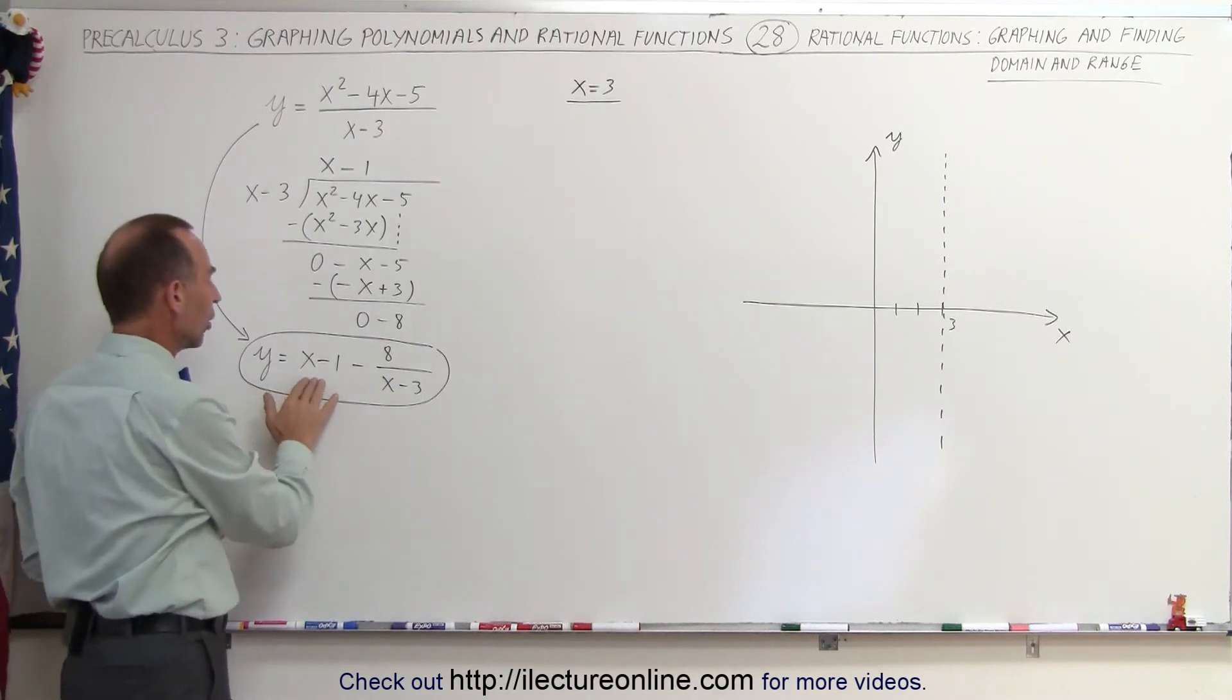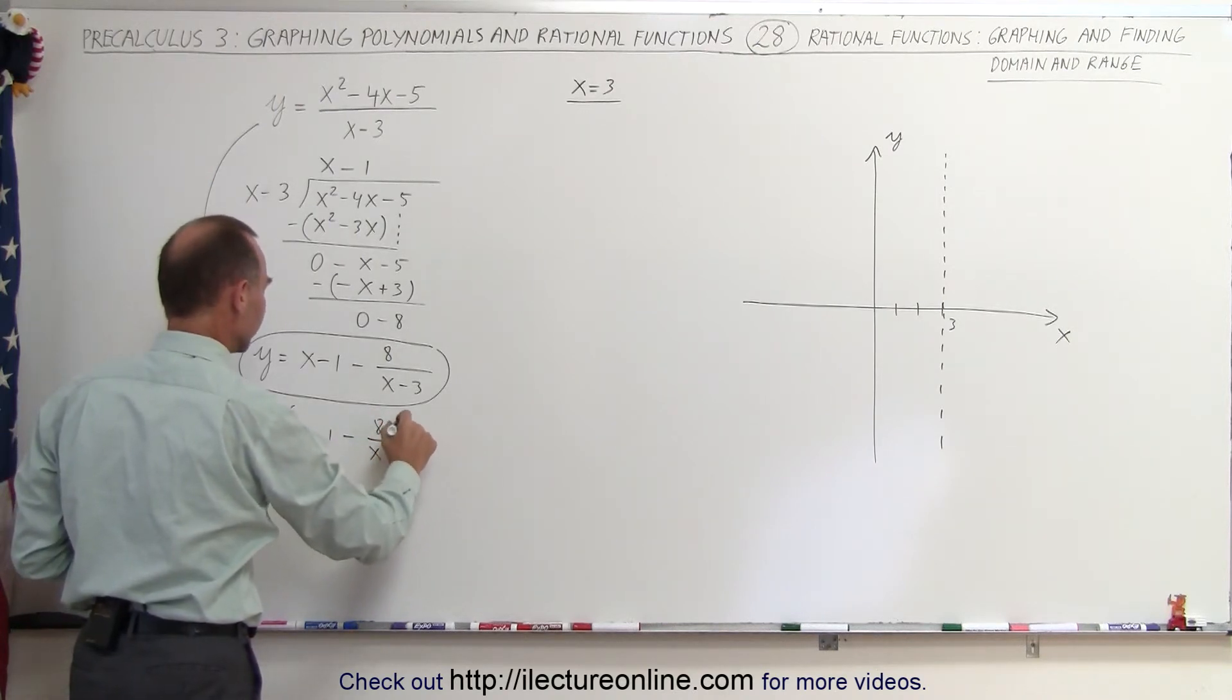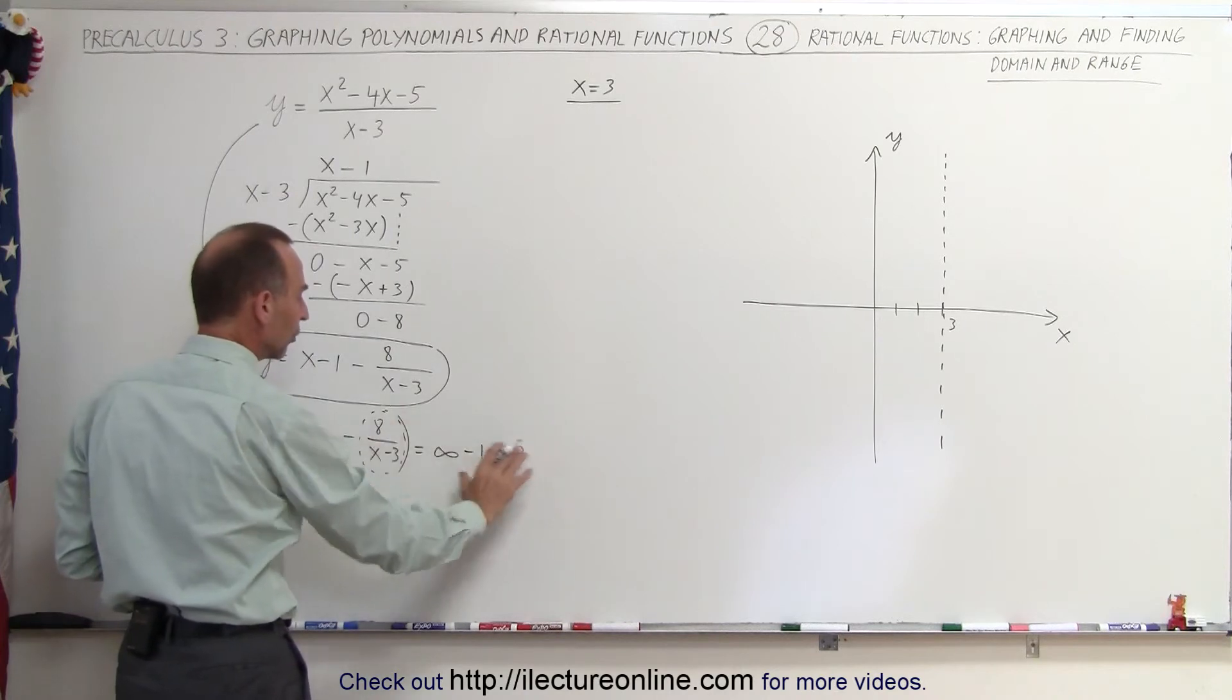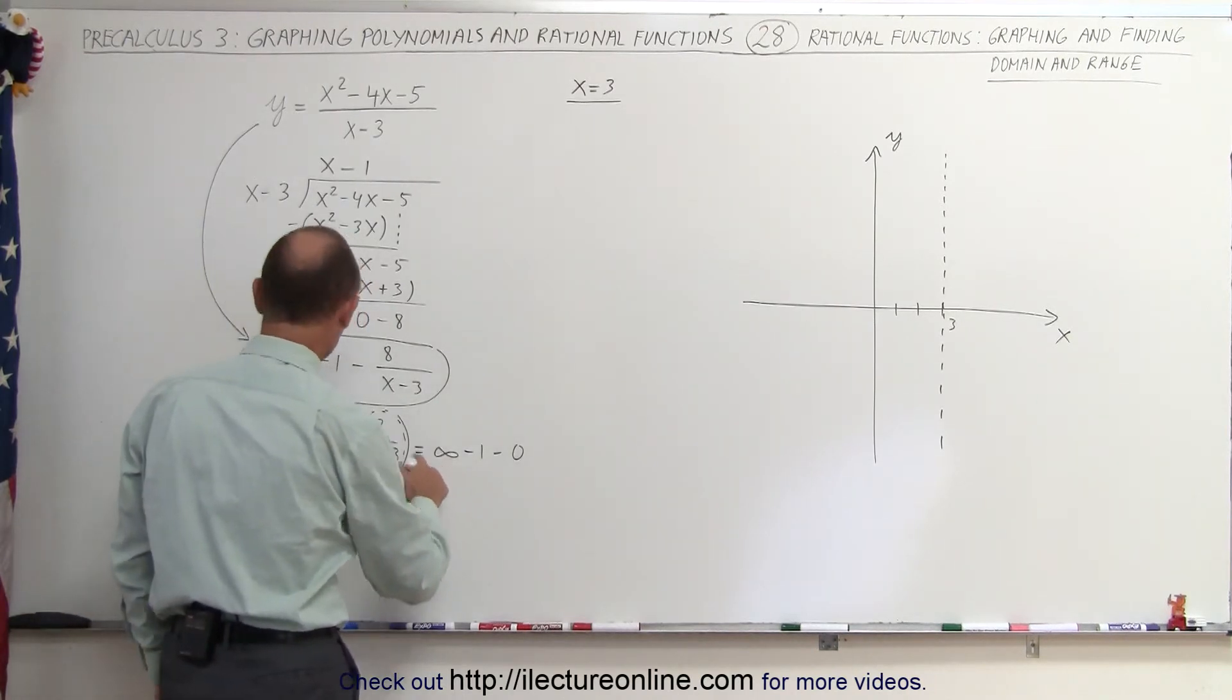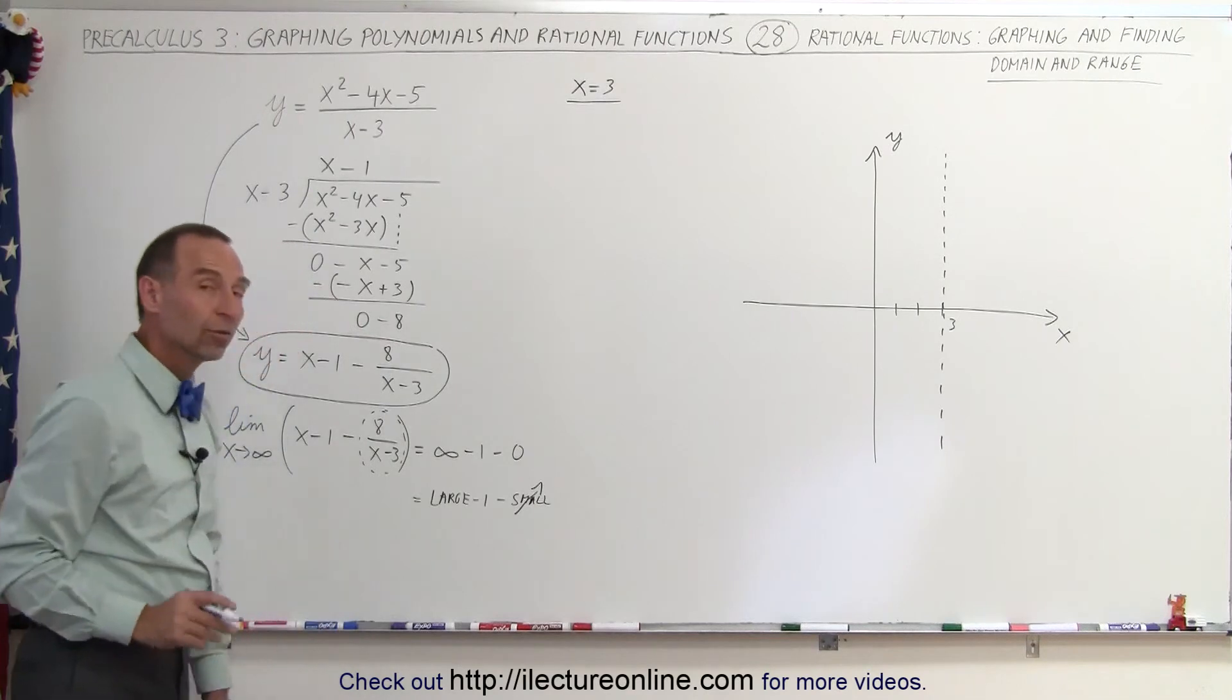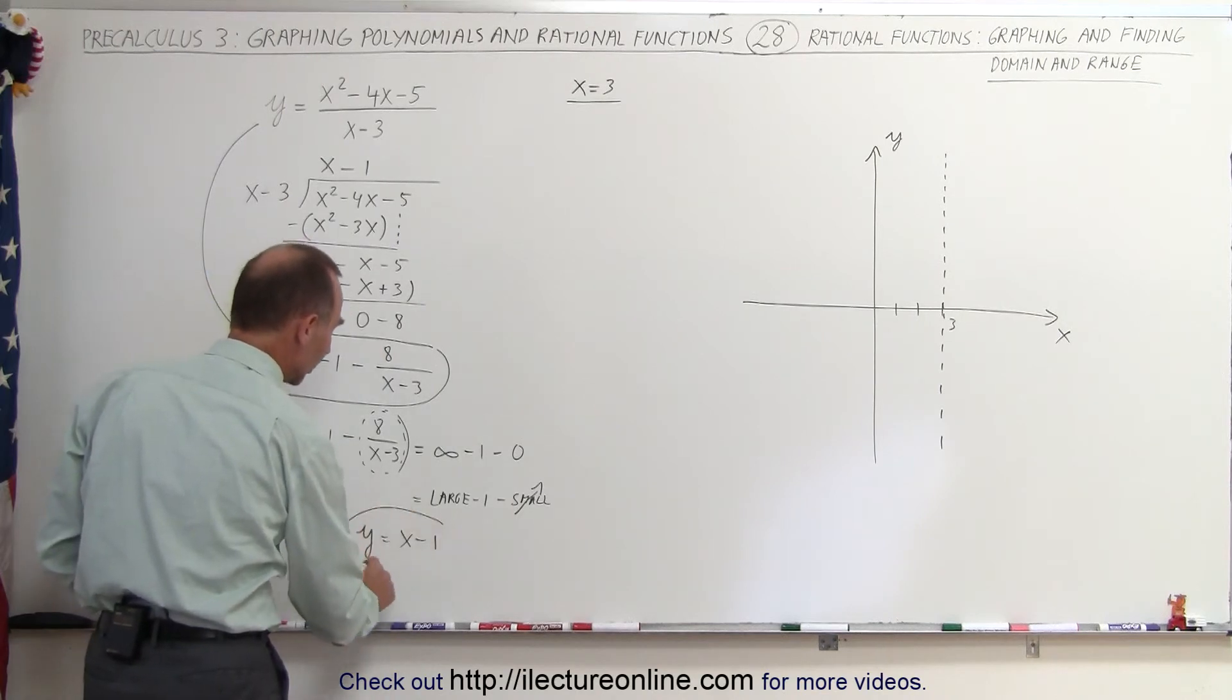What happens when x becomes very large in this case? If we take the limit as x approaches infinity of the quantity x minus 1 minus 8 over x minus 3, notice that this becomes infinity minus 1 minus 0. So this portion right here is negated, it goes to zero, because a divided by infinity is simply zero. And so we can say that basically y will be equal to x minus 1 as x gets larger and larger.